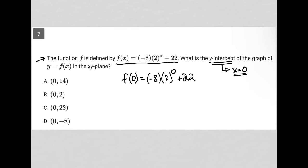So anything to the 0 power is going to equal 1. So I'm going to do my exponents here. So this 2 to the 0 is just 1. Then I have negative 8 times 1 becomes negative 8. Negative 8 plus 22 is 14.